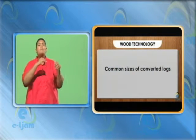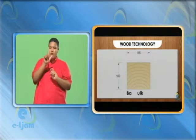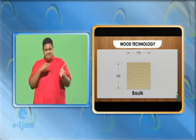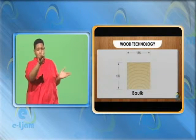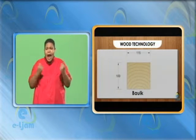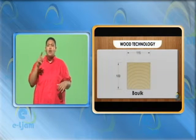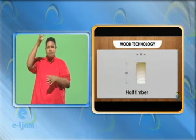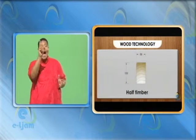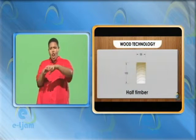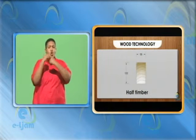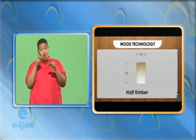Common sizes of converted logs. 5. Bok — a bok has a cross section of at least 115 mm by 100 mm. It can be used in the form of heavy structural work such as a beam or a column. 6. Half Timber — this is one half of a bok that has been cut longitudinally. A half timber is mainly used for structural work, but may be further cut into marketable sizes.